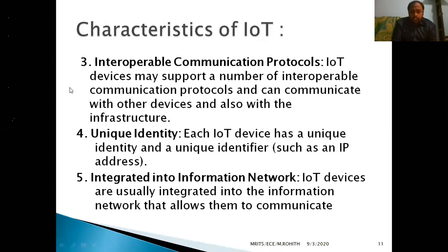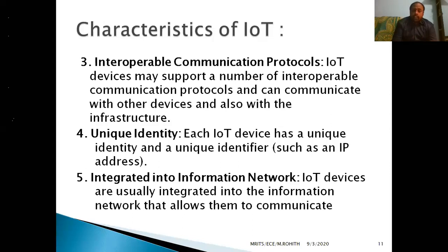The fourth characteristic is unique identity. When you create an IoT device — any sort of sensor transmitting data — that device should have a particular ID number. Just like students are identified with roll numbers, each and every IoT device has its own unique identity number. We have billions of IoT devices in the real-time world. The fifth characteristic is that it should be integrated into the information network — connected to the internet to transmit information and communicate.